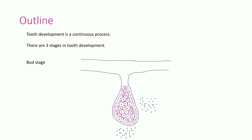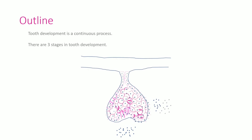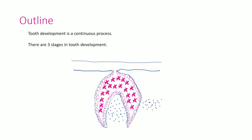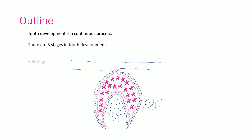Tooth development is a continuous process. There are three stages in tooth development: bud stage, cap stage, and bell stage.